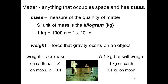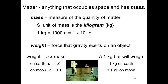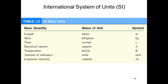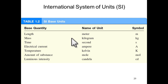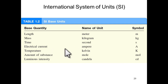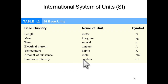The SI units: for length we measure in meters, mass in kilograms, time in seconds, electric current in amperes, temperature in Kelvin, amount of substance in mole, and luminous intensity in candela (cd). Those are the 7 base SI units.